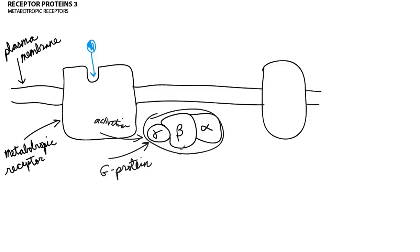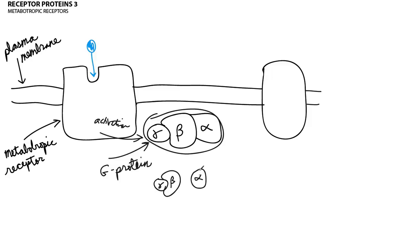The G-protein is composed of three different subunits: a gamma subunit, a beta subunit, and an alpha subunit. When the G-protein is inactive, these three subunits are combined into one G-protein. However, when the neurotransmitter binds and produces the activation, the gamma subunit and the beta subunit stay together, but the alpha subunit dissociates from the others. The alpha subunit is now free to move around through the inside of the neuron and affect the internal chemistry of the neuron.